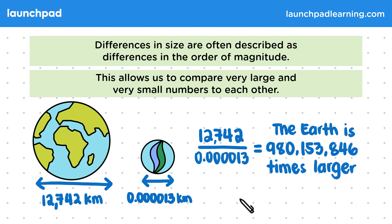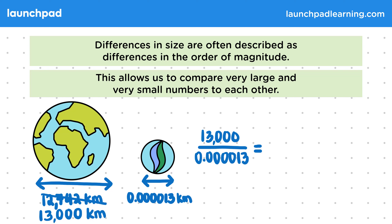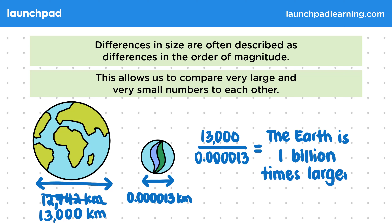But how can we make this easier? When we compare the sizes of two objects like this, the actual lengths can be estimated because it's the relative difference that we're more interested in. We can round up the diameter of the Earth to the nearest 1,000 kilometres to give us a value of 13,000 kilometres. If we run this through a calculator, we end up finding out that the Earth is 1 billion times larger than a marble.